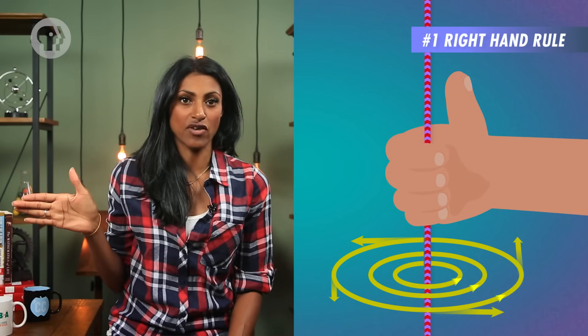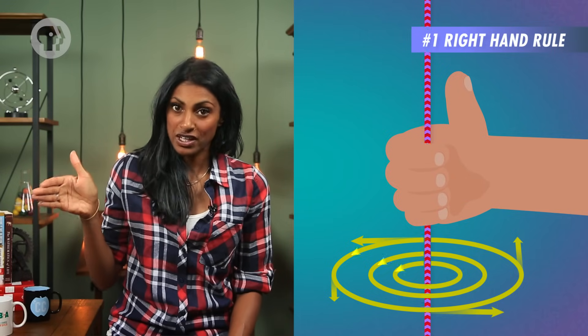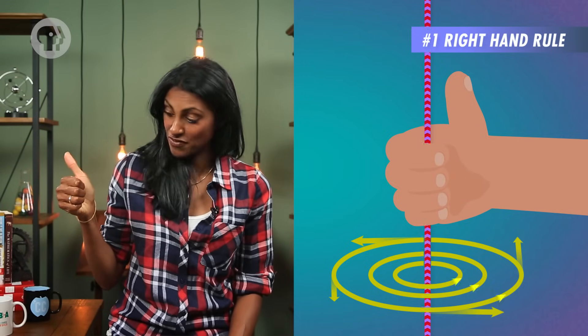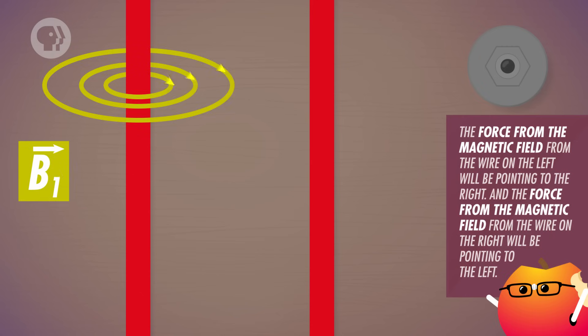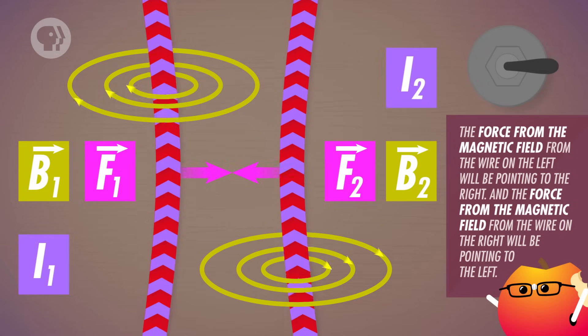For this example, we'll say that they're vertical wires with the current flowing upward. If you point your right thumb in the direction of the current in each wire, your fingers will curl in the direction of the magnetic field. The magnetic field from the wire on the left will be pointing to the right, and the magnetic field from the wire on the right will be pointing to the left. So the wires will attract each other.